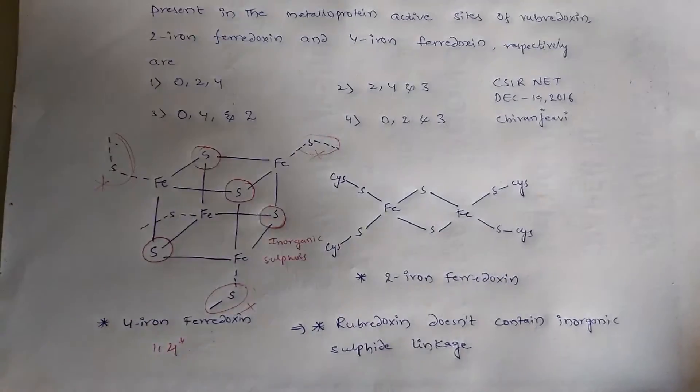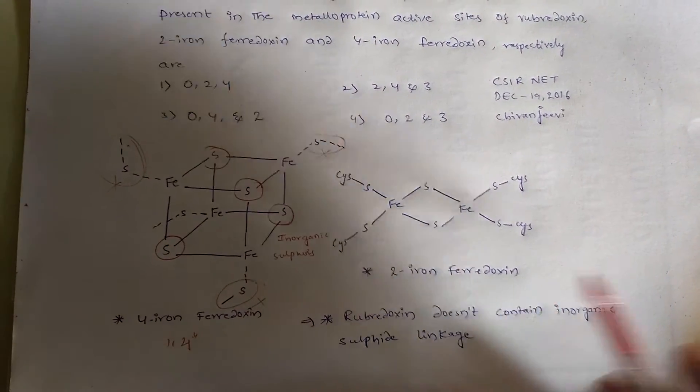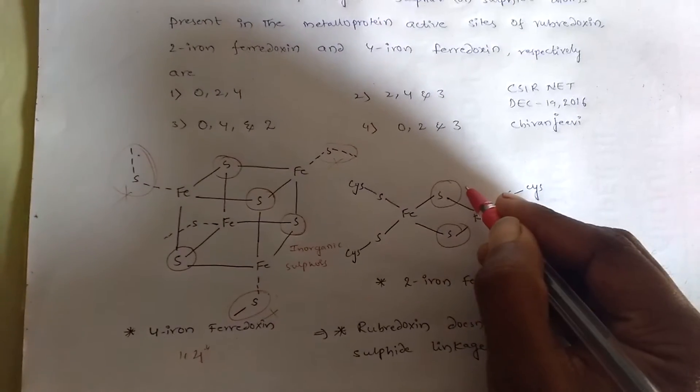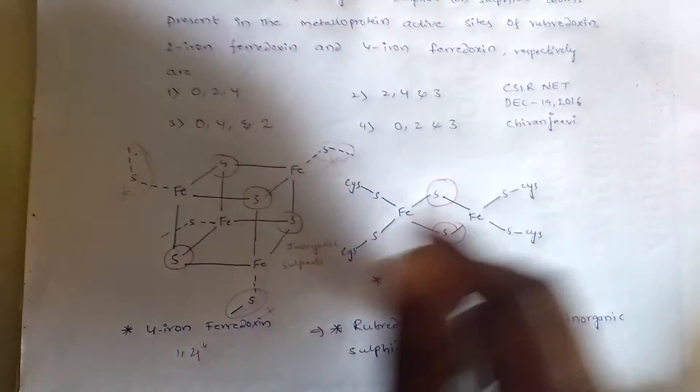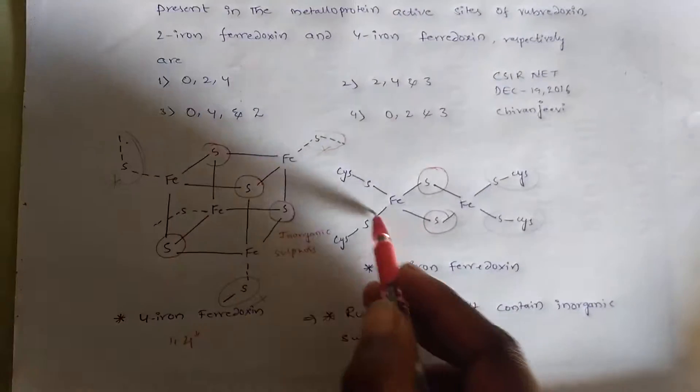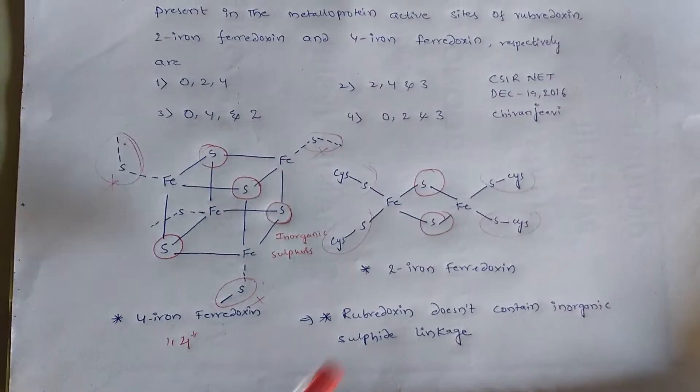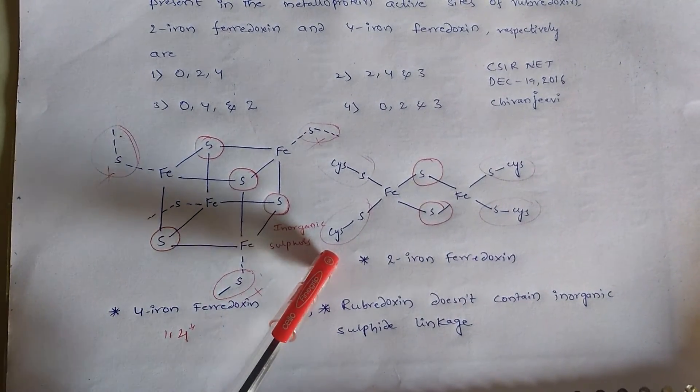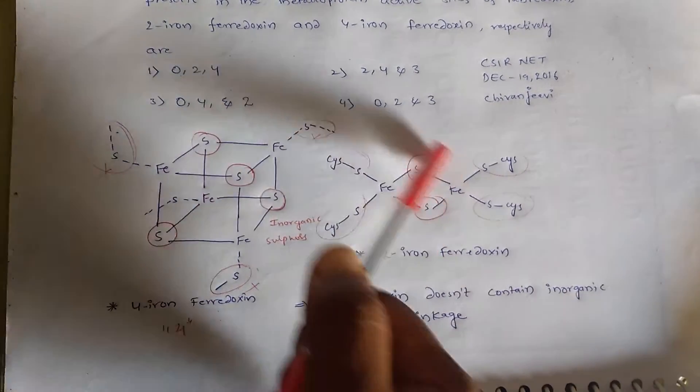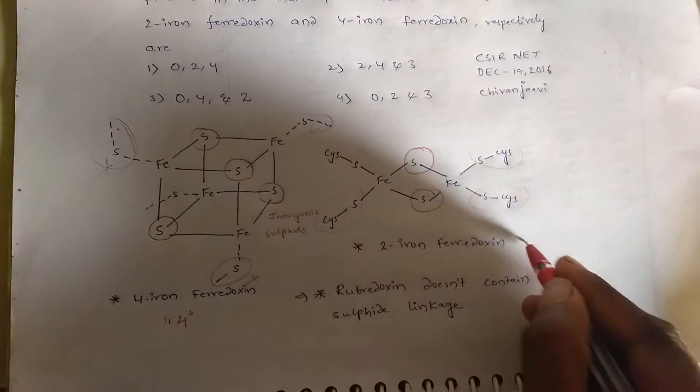Next, if you observe 2-iron ferredoxin, we have 2 inorganic sulfurs, and these 4 are cysteine-substituted sulfurs. These cysteine sulfurs are not considered as inorganic sulfurs. So 2-iron ferredoxin has 2 inorganic sulfurs.